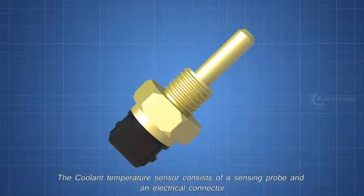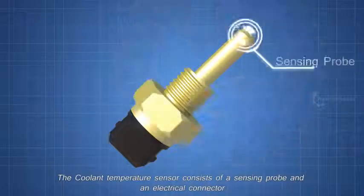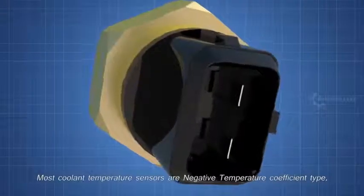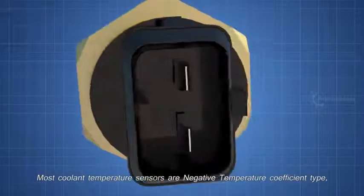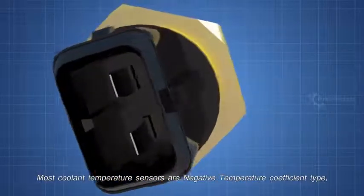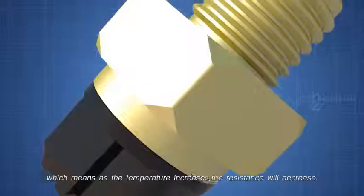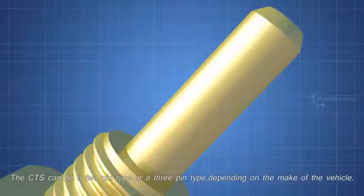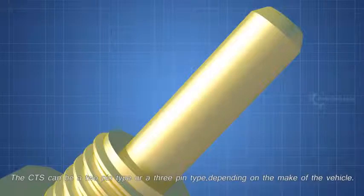The data is also used to control the radiator fan and to update the temperature gauge on the driver console. The coolant temperature sensor consists of a sensing probe and an electrical connector. Most coolant temperature sensors are negative temperature coefficient type, which means as the temperature increases, the resistance will decrease. The CTS can be a 2 pin type or a 3 pin type, depending on the make of the vehicle.